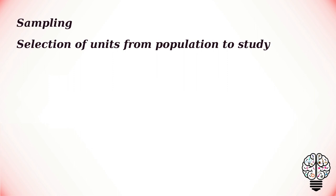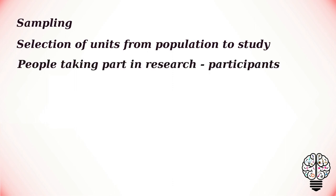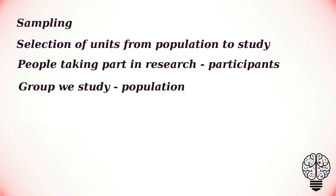Sampling is the process of selection of units — for example, people of an organization — from a population to study. The target population is the total group of individuals from which the sample might be drawn. A sample is the group of people who take part in the investigation, and the people who take part are referred to as participants. In psychological research we are interested in learning about large groups of people who all have something in common. We call the group that we are interested in studying our target population.